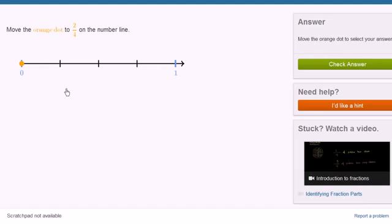Move the orange dot to 2 fourths on the number line. So we have 1, 2, 3, 4 equal sections. We need to move it to 1, 2 of them. If they didn't divide it into four equal sections for us, then it wouldn't have been so easy to just count 2. The number of sections has to be the number in the denominator. And then the number in the numerator is how many of those we move the dot to.